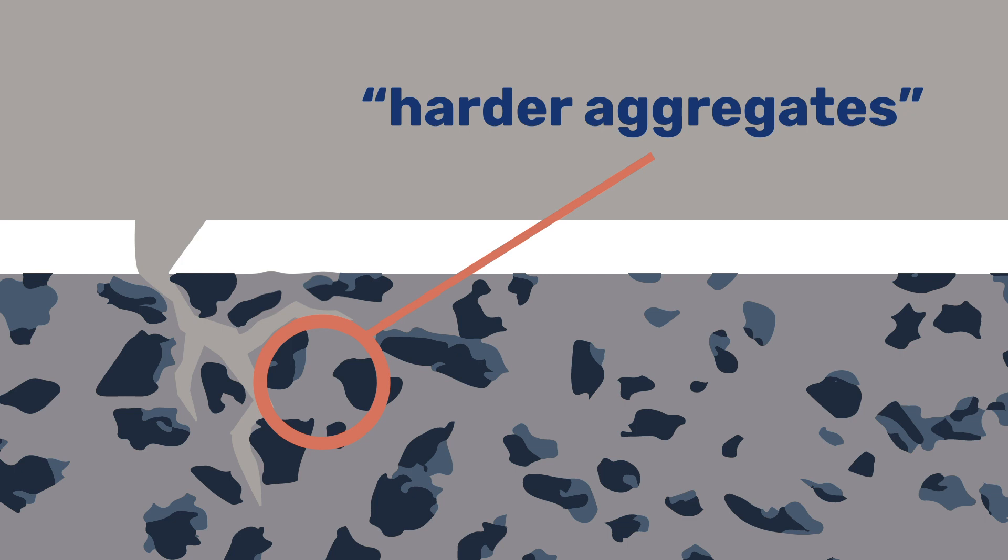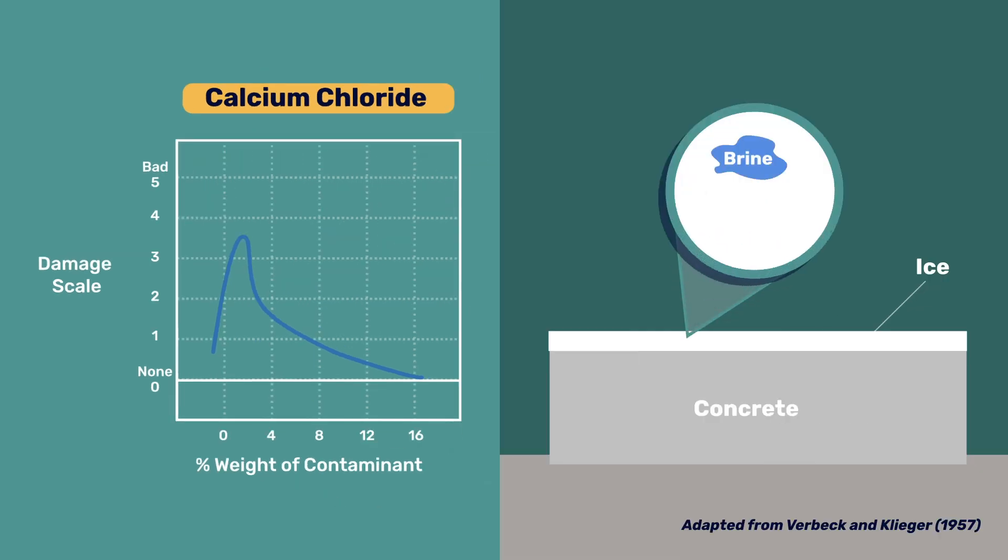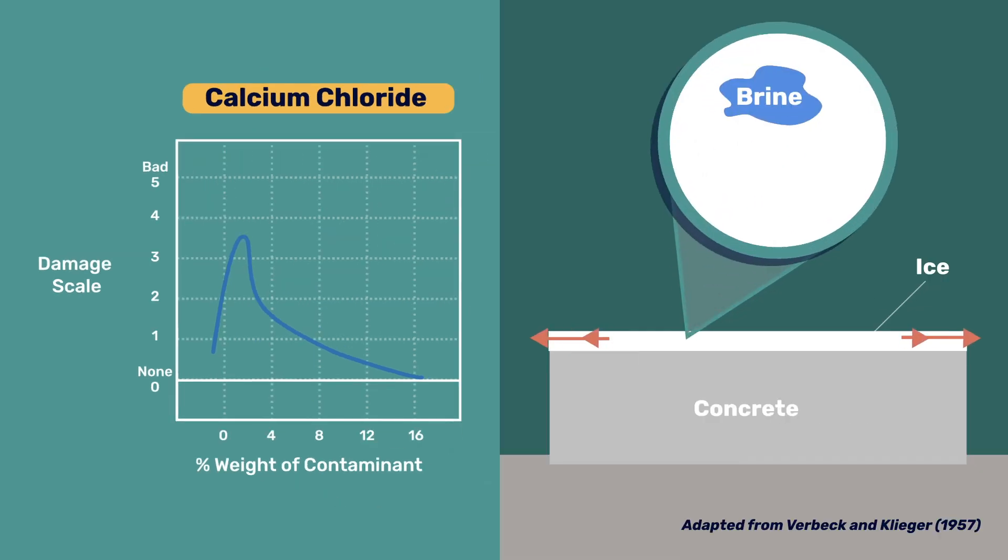The spalling mechanism also explains the pessimum. Indeed, low levels of contaminants create brine droplets that act as flaws in the ice layer, making it easier for the ice to crack. So, for low contamination levels, increasing the contaminant dosage increases the damage.